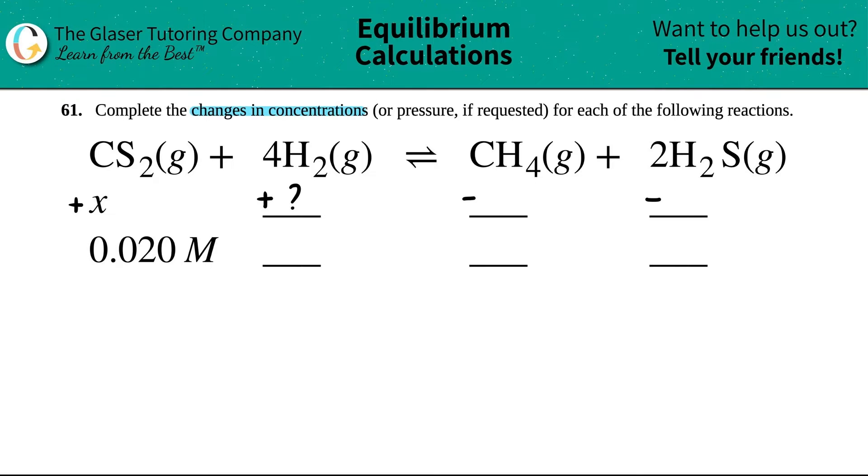Now we just got to figure out what these are. Well, that comes from the coefficients. There was no coefficient in front of the CS2, that means there was one. There was a four in front of the H2, nothing in front of the CH4, that means there was one, and there was a two here.